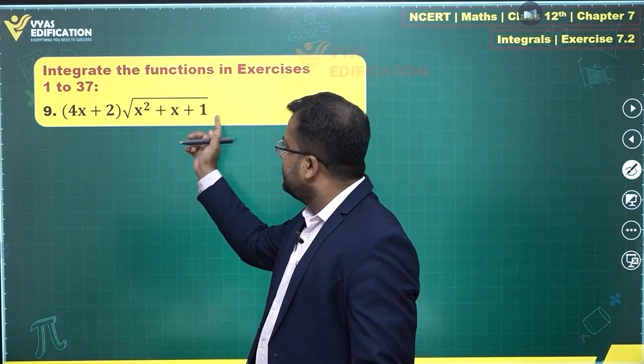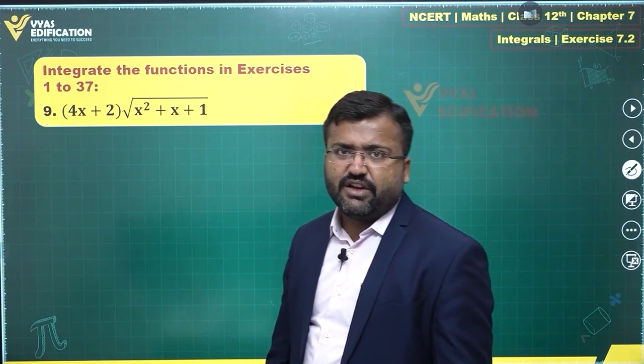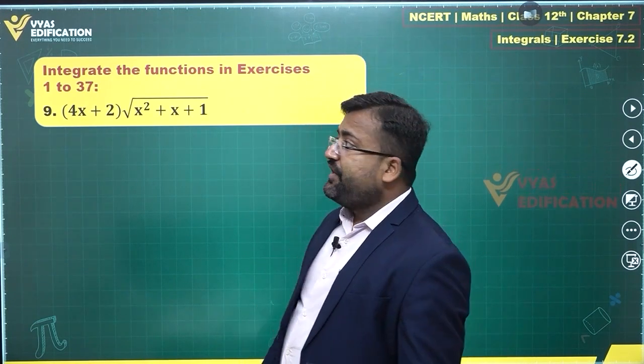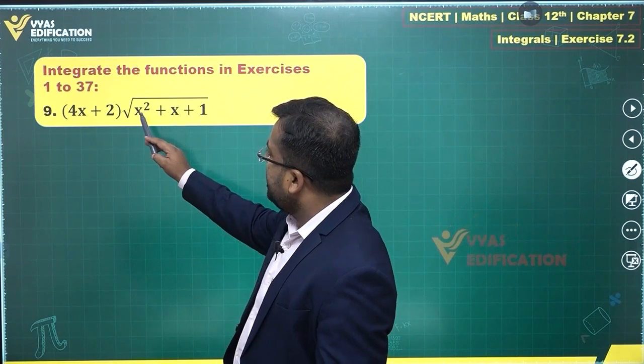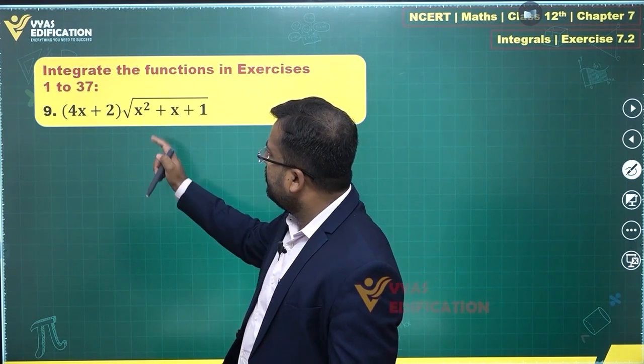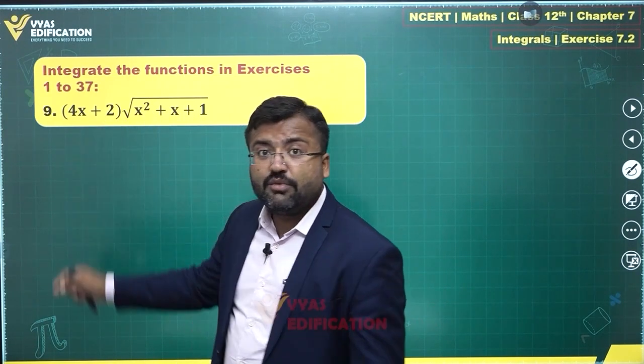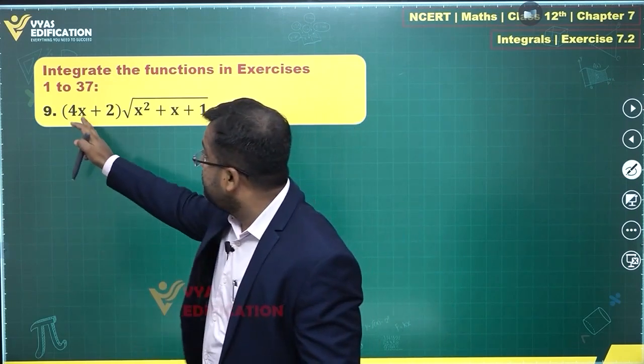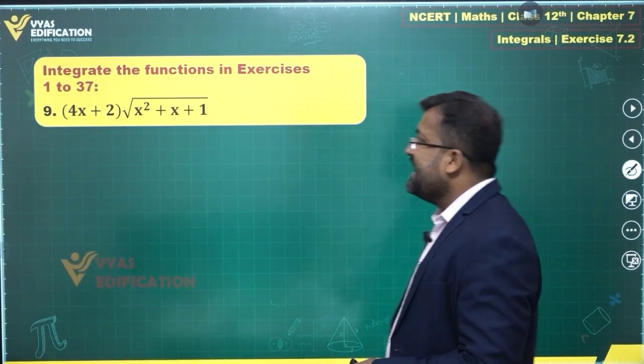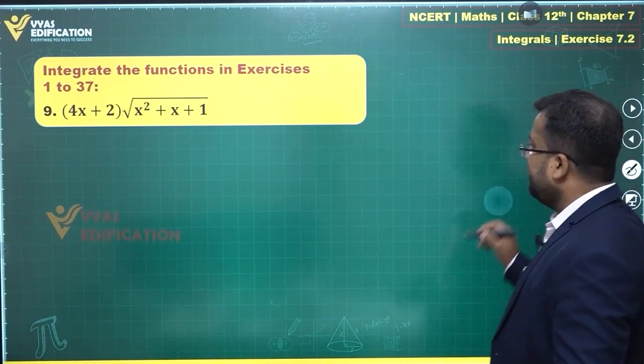So you can use this substitution: x square plus x plus 1 equal to t. But for that, the derivative of x square plus x plus 1, what is that? 2x plus 1 should have been outside. Now, this is 4x plus 2, but you can take out a factor of 2 common. This becomes 2x plus 1 times 2, and that's the standard substitution.